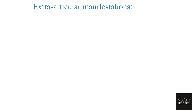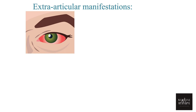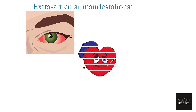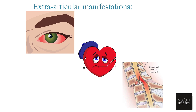Ankylosing spondylitis presents with a wide range of extra-articular manifestations. Ocular: about 25% of patients develop at least one attack of acute anterior uveitis during the natural history of the disease. Cardiovascular: patients can develop aortic incompetence, cardiomegaly, conduction defects, and pericarditis.